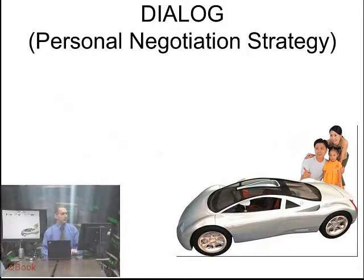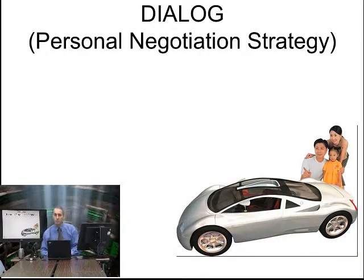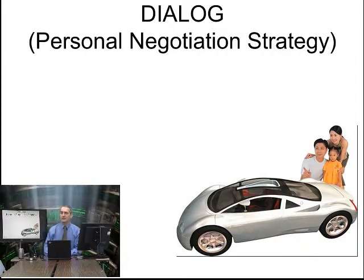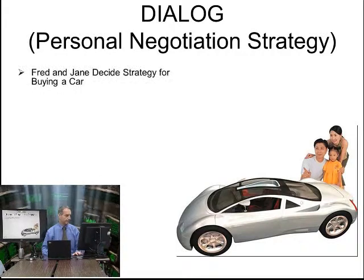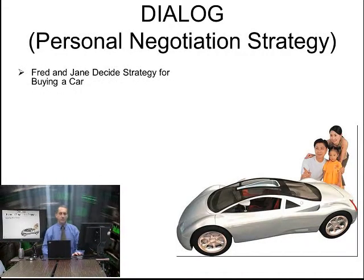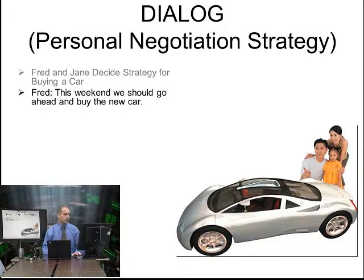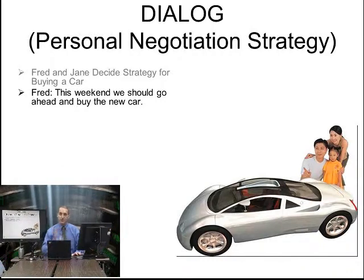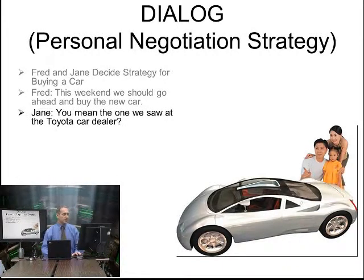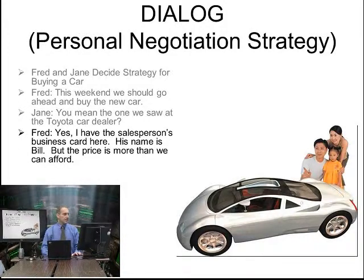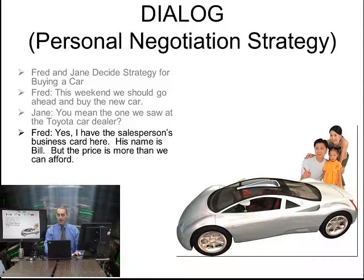Let's look at a dialogue to see how this works. Today we have two dialogues — one in a family context and one in business. We have Fred and Jane deciding a strategy for buying a car. Fred says they should go ahead and buy the new car this weekend. Jane asks if he means the one at the Toyota dealer. Fred says yes, he has the salesperson Bill's business card, but the price is more than they can afford. Jane suggests making an offer 20% below the list price.